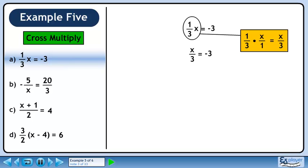1 over 3 and x are connected through multiplication. If we rewrite x as x over 1, then multiply the numerators and multiply the denominators, we get x over 3. So the original equation can be written x over 3 equals minus 3.